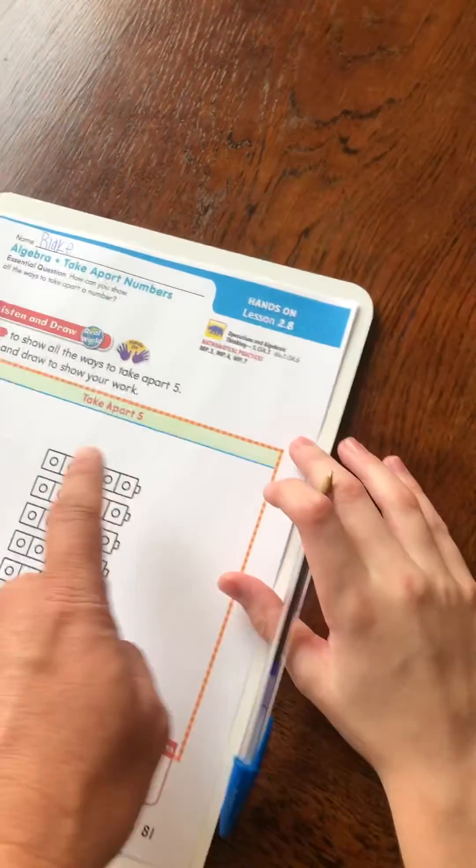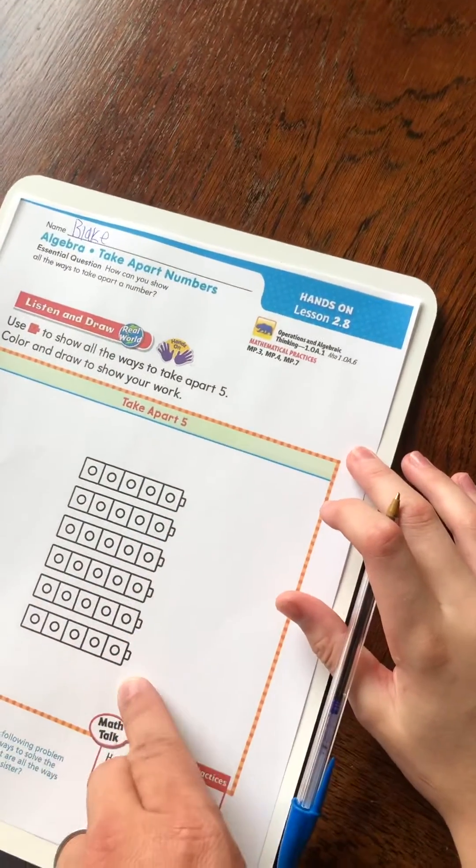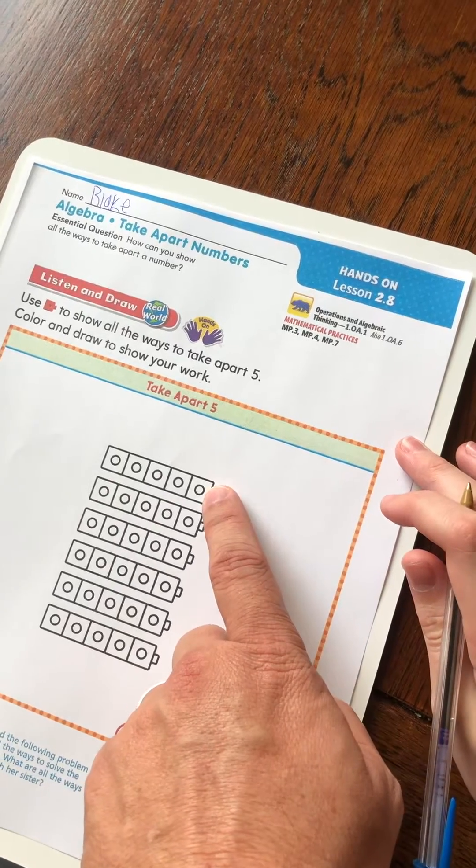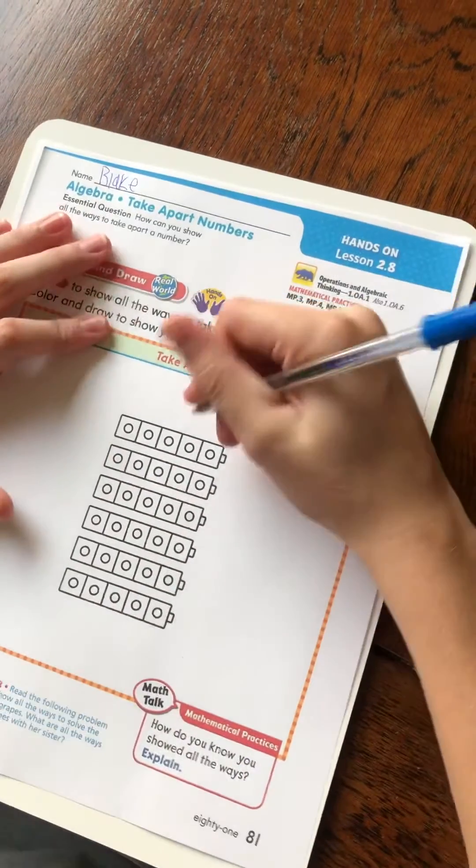Okay, so we have several sets of five blocks, right? Yes. So if right here you were to color in just one block on the end, why don't you do that?